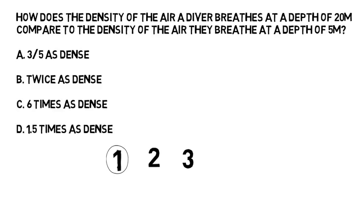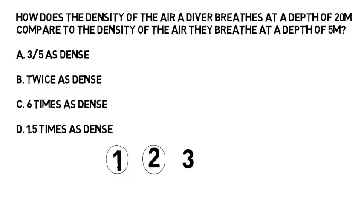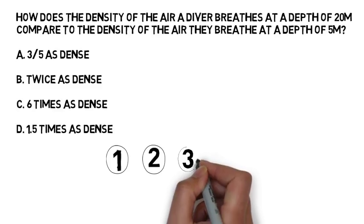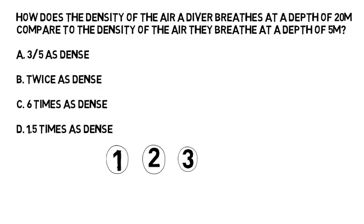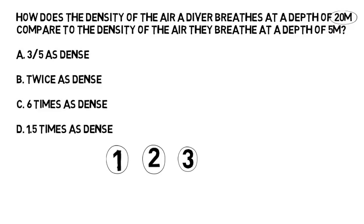The moment you see a question about density, the first thing you need to do is look at the question and ask yourself what depth is the diver currently at. How does the density of the air a diver breathes at a depth of 20 meters? So they're at 20 meters. What is the pressure at 20 meters? It's three atmospheres. So now we've got three filled in under step one.